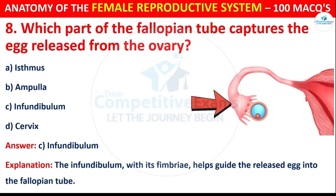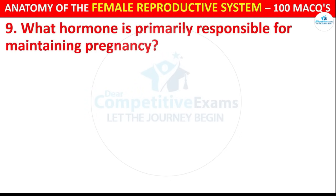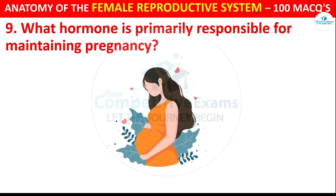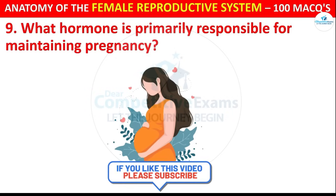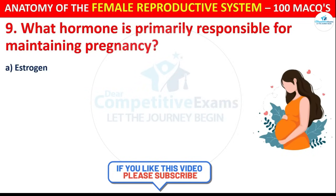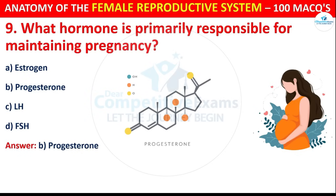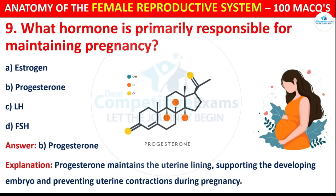Question number 9: What hormone is primarily responsible for maintaining pregnancy? Options are: Estrogen, Progesterone, LH, or FSH. The correct answer is B, i.e. Progesterone. Progesterone maintains the uterine lining, supporting the developing embryo and preventing uterine contractions during pregnancy.